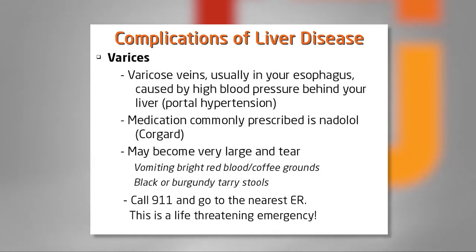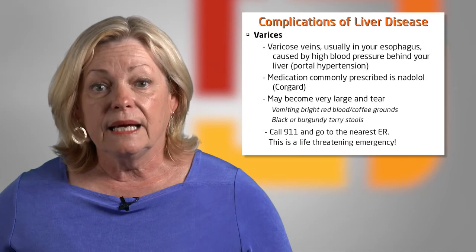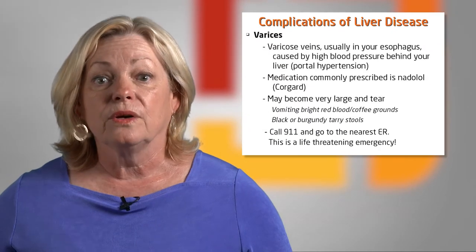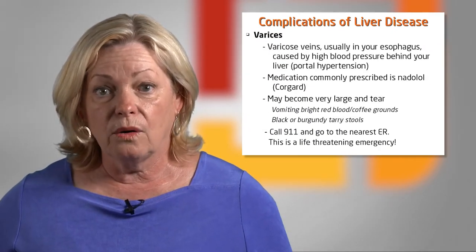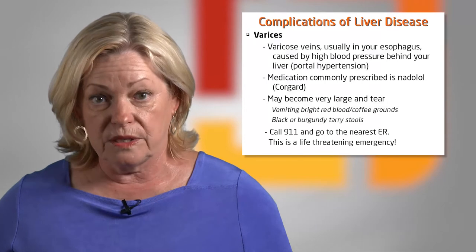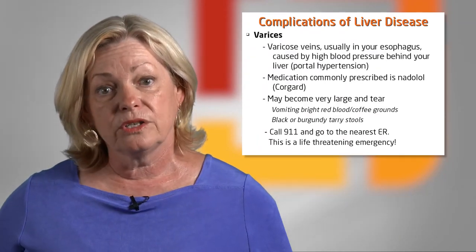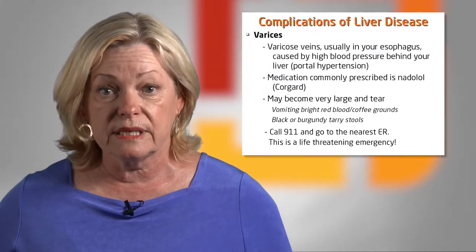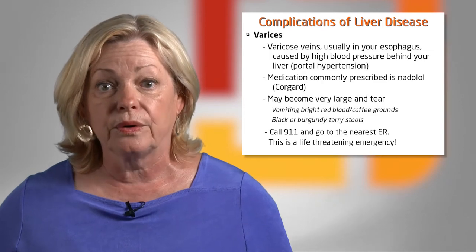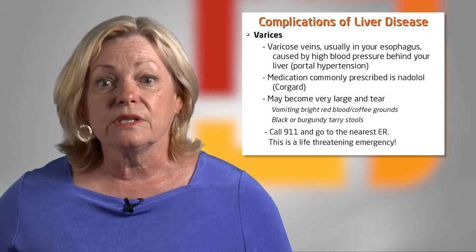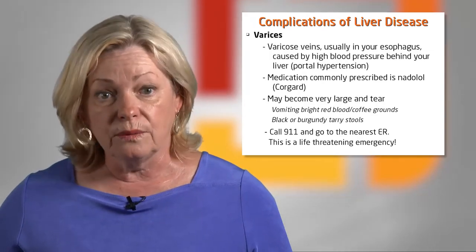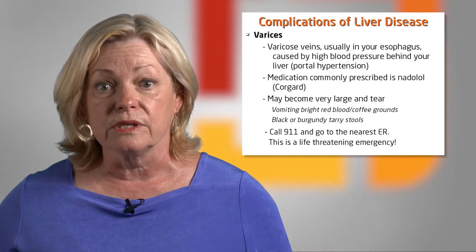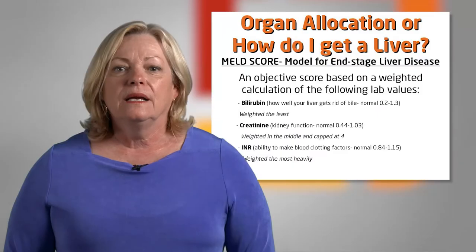We also use a medication called natalol and other beta blockers — drugs that end in O-L-O-L. To remind you again: if you are vomiting bright red blood or coffee grounds material, or having black, tarry, or burgundy stools with a distinctive copper odor, this is a life-threatening emergency. Call 911 and go to the nearest emergency room.